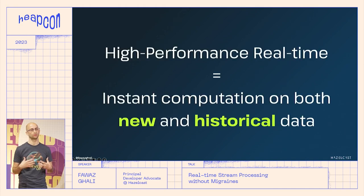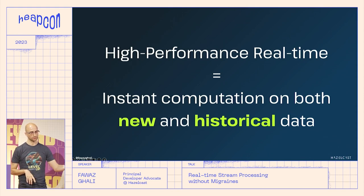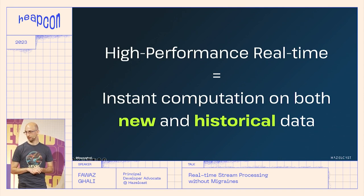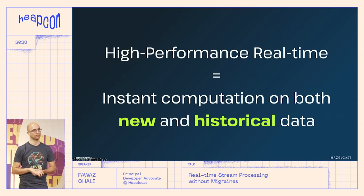Today we're going to work with two different types of data: real-time data generated in this very moment, and batch data. Some people say they'll do real-time stream processing on real-time data, but that's only part of the story. We want to merge between different types of data coming at different speeds.